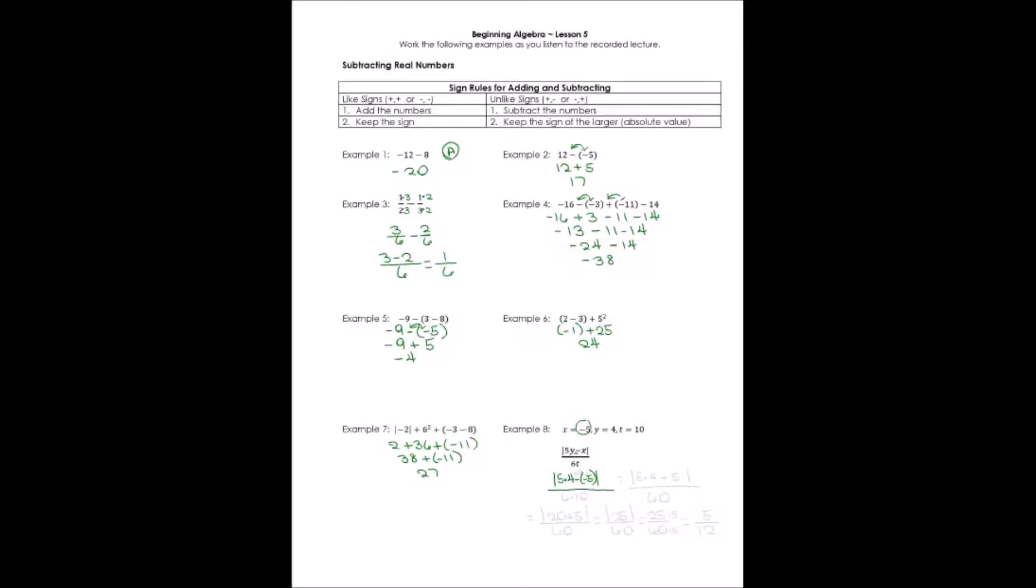The denominator, 6 times t, which is 10, was pretty easy. Let's go back to the numerator and see if we can fix some things here. I'm going to say this is the same as absolute value of, and I want to fix this, 5 times 4 plus 5. I want to take care of these double negatives first because they confuse me. I can go ahead and say 6 times 10 in the denominator is 60.